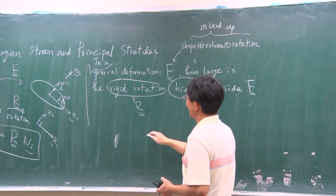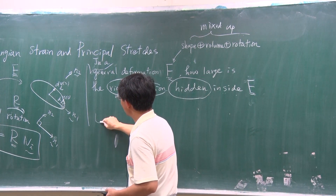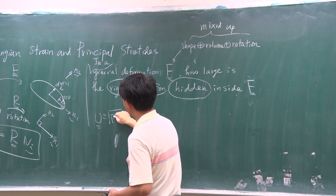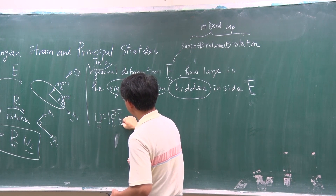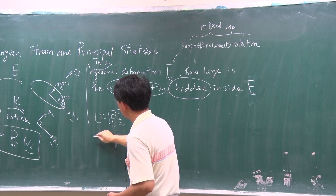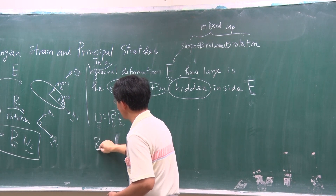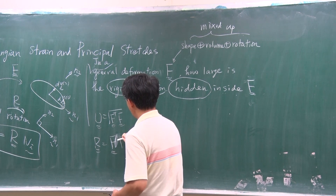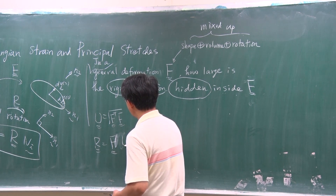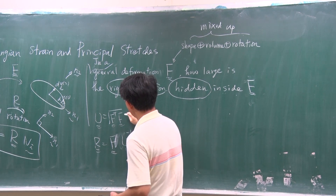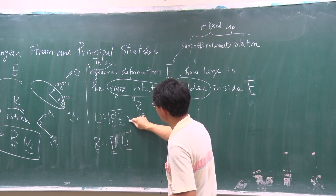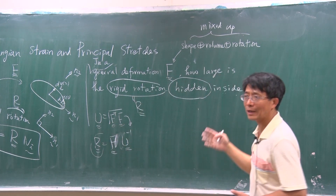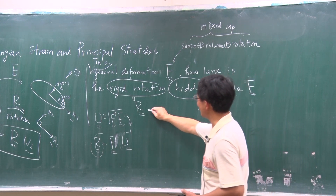How to compute R? U squared equals F-transpose times F, and then R is just F times U-inverse. We first compute U from F, then U-inverse, and then we get R. Now, we get the bad guy.